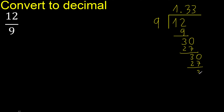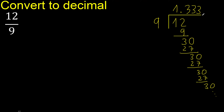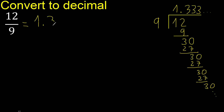Subtract, complete. 30 — 9 multiplied by 3 is 27, subtract, complete. Here it repeats again — therefore 3 repeats. The answer is 1.333... with 3 repeating.